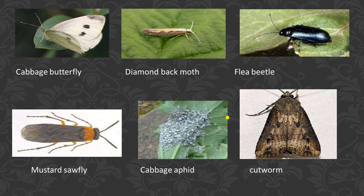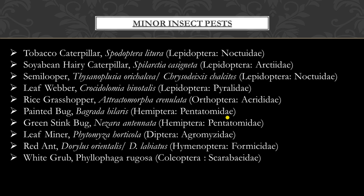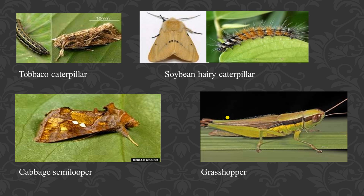Next are the minor pests: tobacco caterpillar (Spodoptera litura), soybean hairy caterpillar, semi-loopers, leaf webbers, rice grasshoppers, painted bugs, green stink bugs, leaf miner, red ant, and white grub, etc.